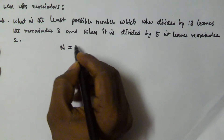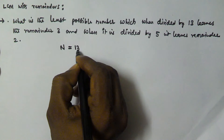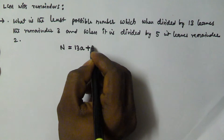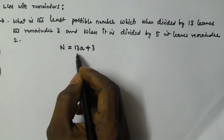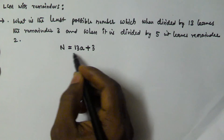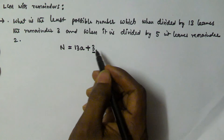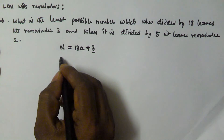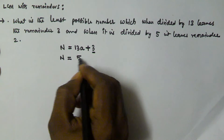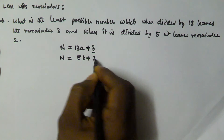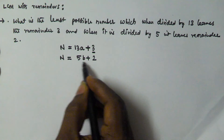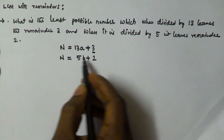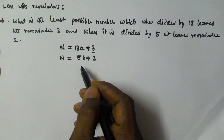When n is divided by 13 and leaves remainder 3, we can write this as n = 13a + 3. When the same number n is divided by 5 it leaves remainder 2, so we can write n = 5b + 2.